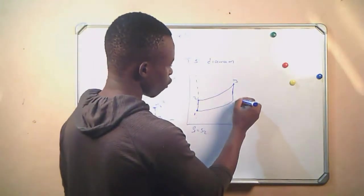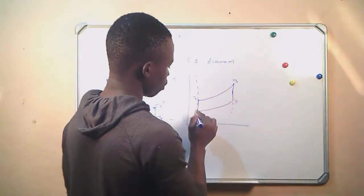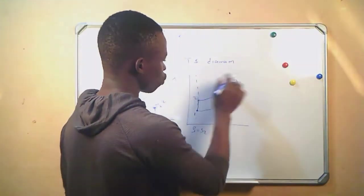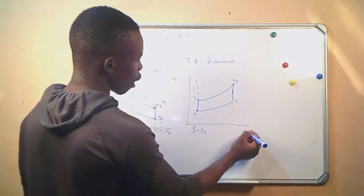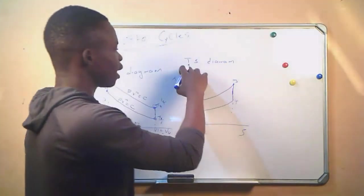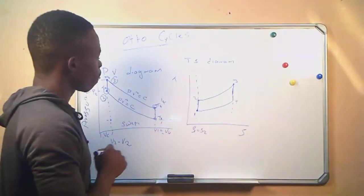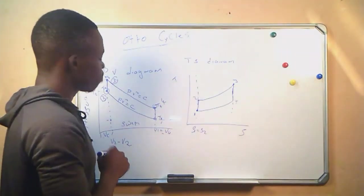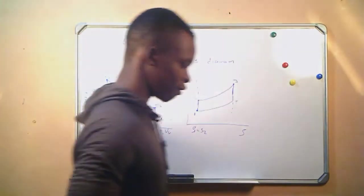Points 1, 2, 3, and 4 form our TS diagram, and together with the PV diagram, these are the representations we use for the Otto cycle. These are some of the formulas we are going to use.